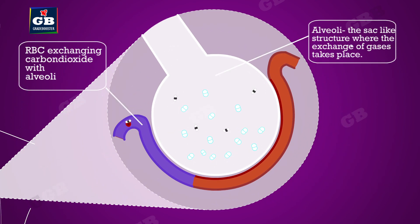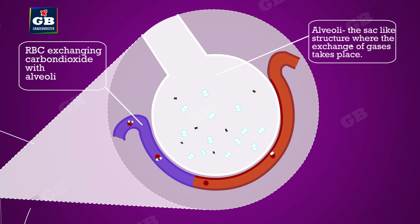The blood brings carbon dioxide from the rest of the body for release into the alveoli. The air in the alveoli is rich in oxygen. The exchange of gases takes place between the alveoli and blood by simple diffusion.